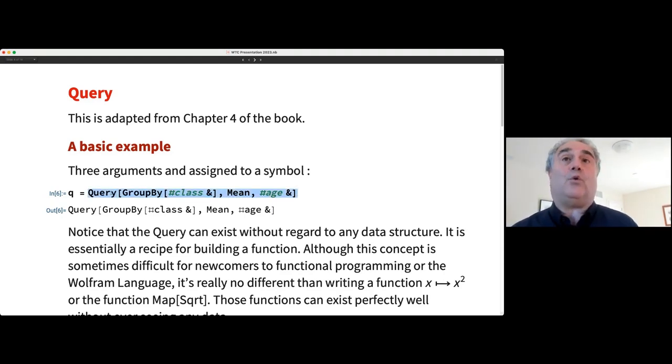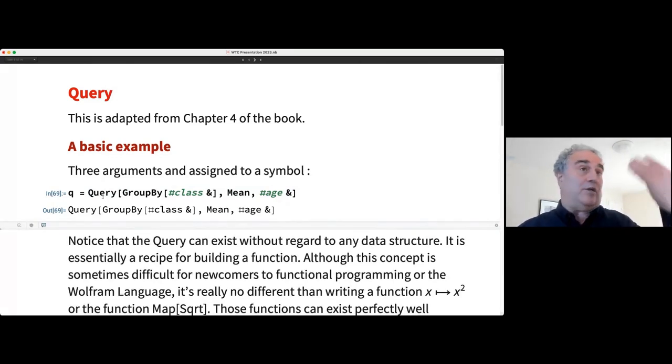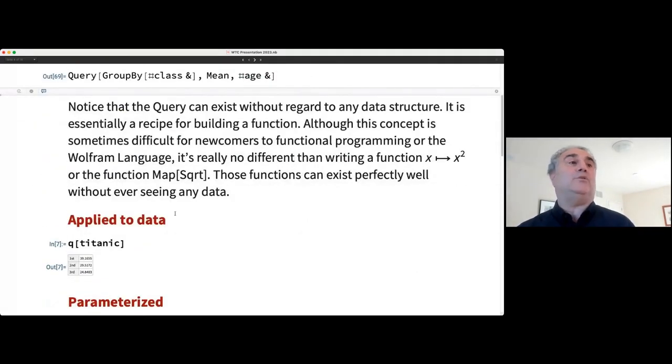So let's look at what I present in chapter four of the book, which is how to use the query operator to do this in, I think, a more aesthetically pleasing and often a more efficient way. So let's define a query. And we just use the query head. And then we're going to have three arguments, we're going to have a grouper, we're going to have something that's going to take the mean of each of the groupings, and what are we going to take it of, the age. And so you'll see, I'm not applying this to any data, there's no data attached to this query. It's just sort of a lazy functional construct that's sitting out there, just like you can have a function f or a function group by class ampersand. And it just kind of sits there waiting for you to use it.